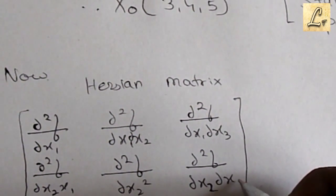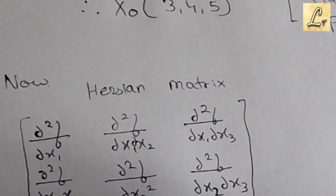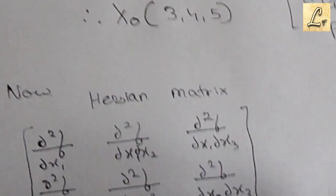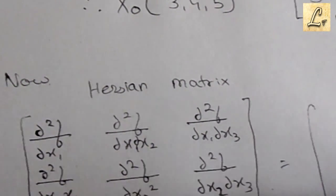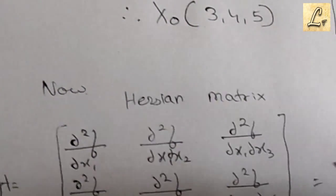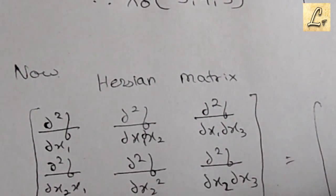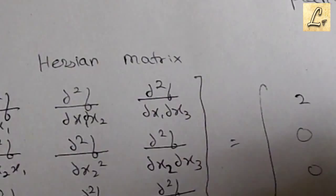So now we'll compute it. We are getting 2, 0, 0; 0, 2, 0; and 0, 0, 2.